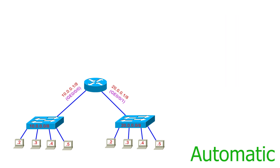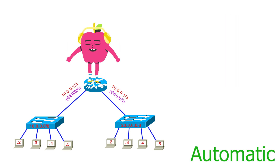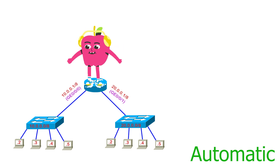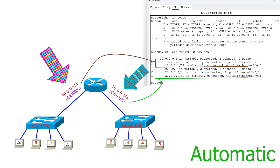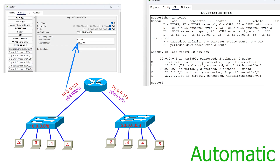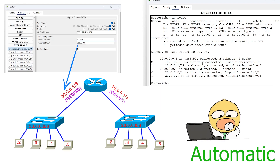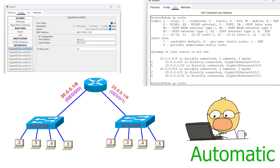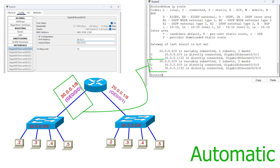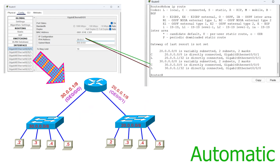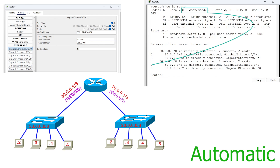In the automatic method, a router automatically adds routing information. It uses the IP configuration of the active interfaces to build the routing information. When we change an interface's IP configuration, the router automatically updates the related information in the routing table. It adds two routes from each interface's IP configuration.